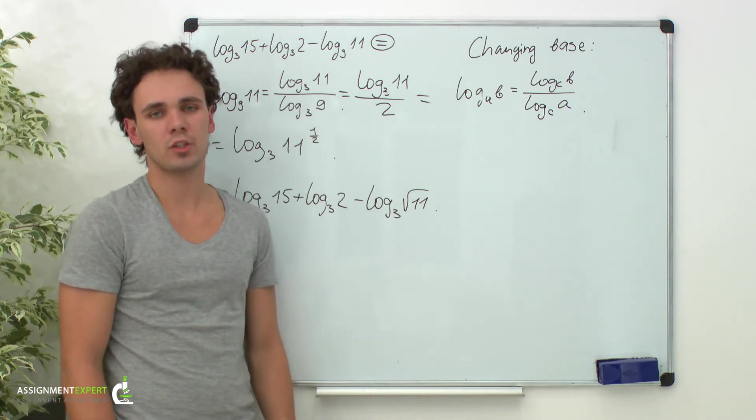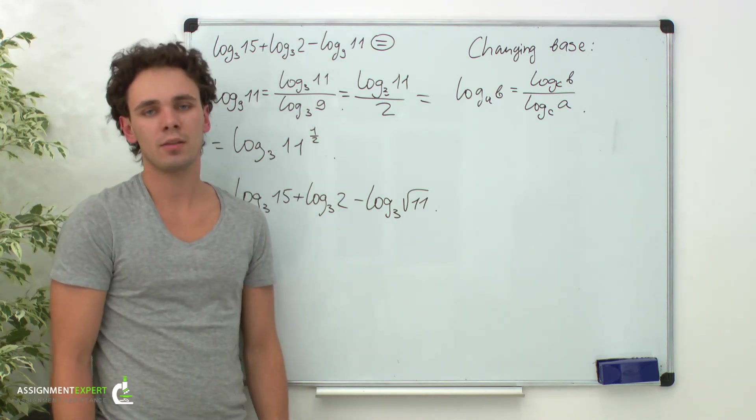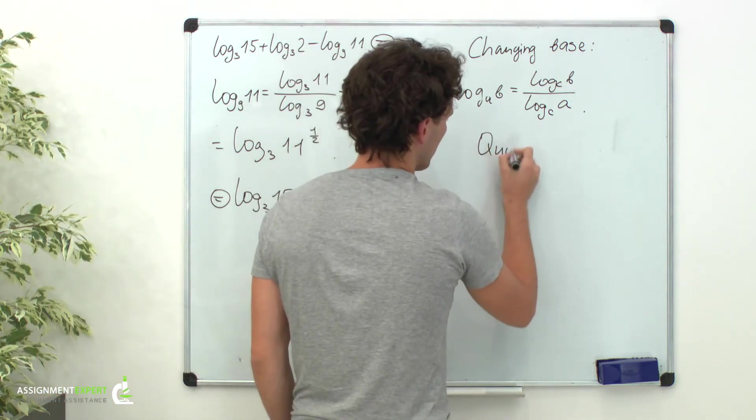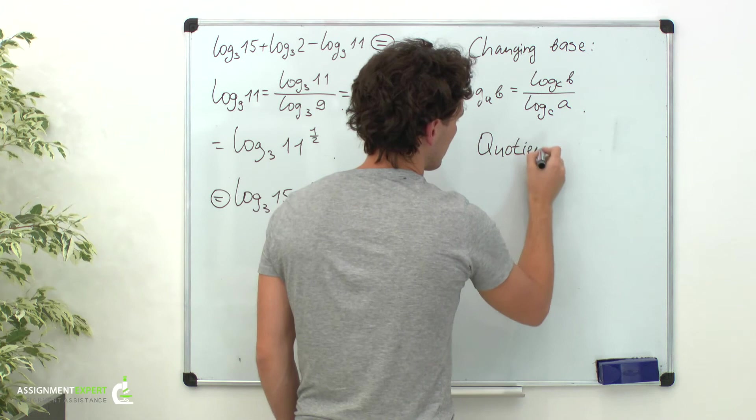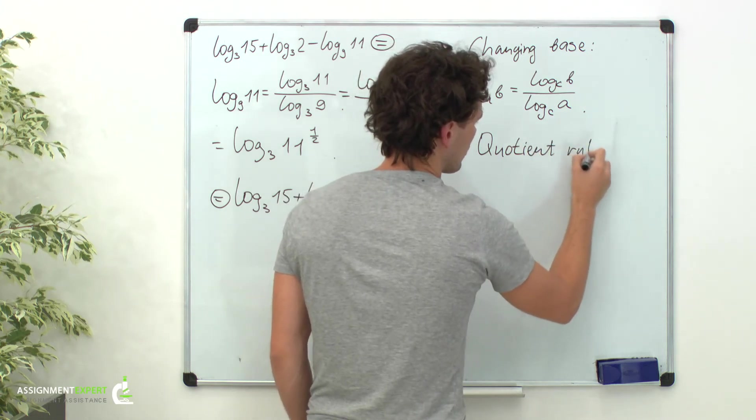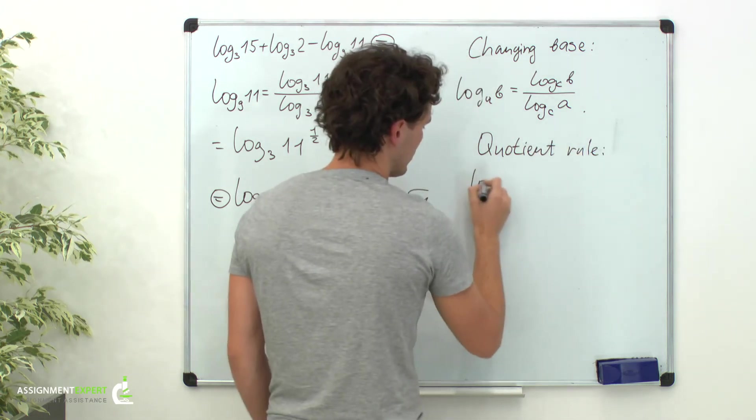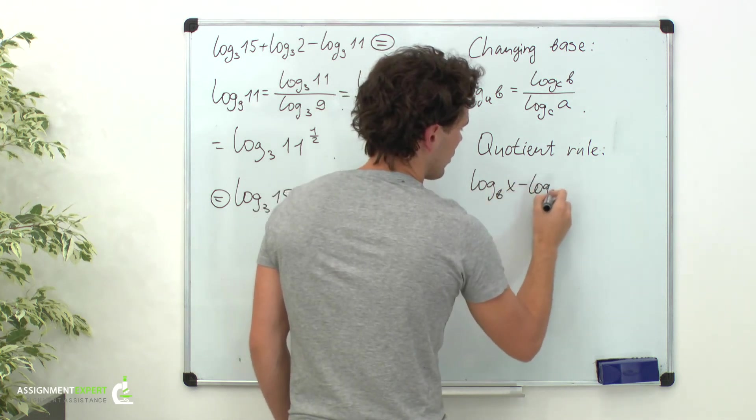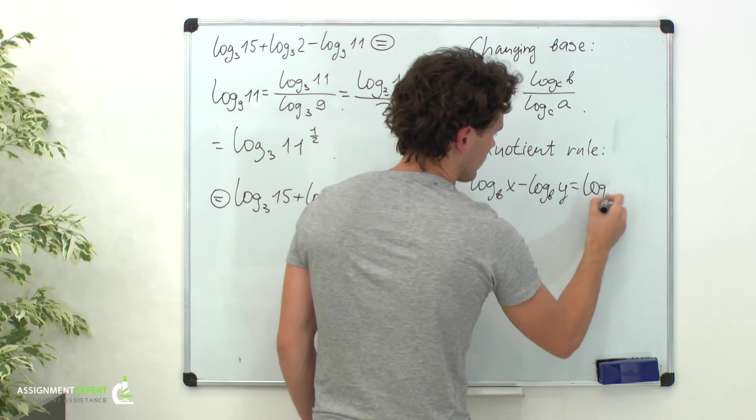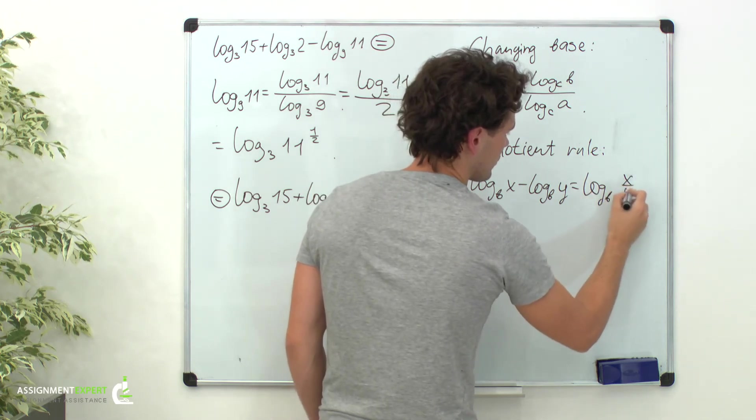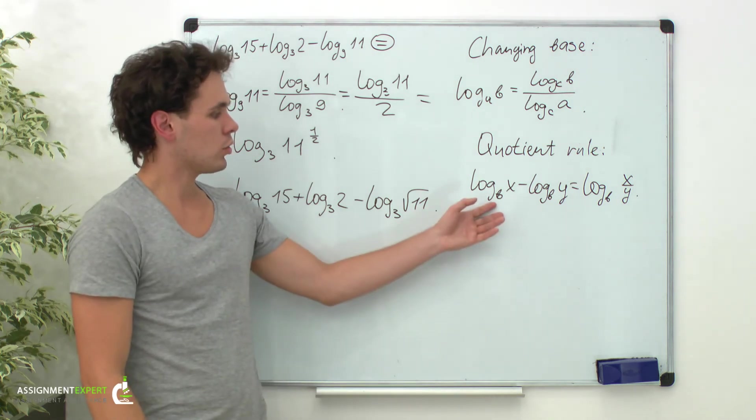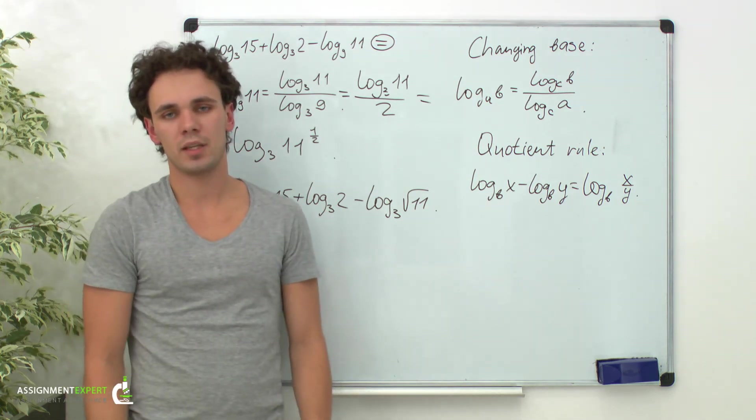We already know the product rule from previous videos. Now let's recall the quotient rule. This rule states that the difference of 2 logarithms with the same base equals the logarithm of the quotient. Similarly to the product rule, in this rule all of the logarithms are of the same base.